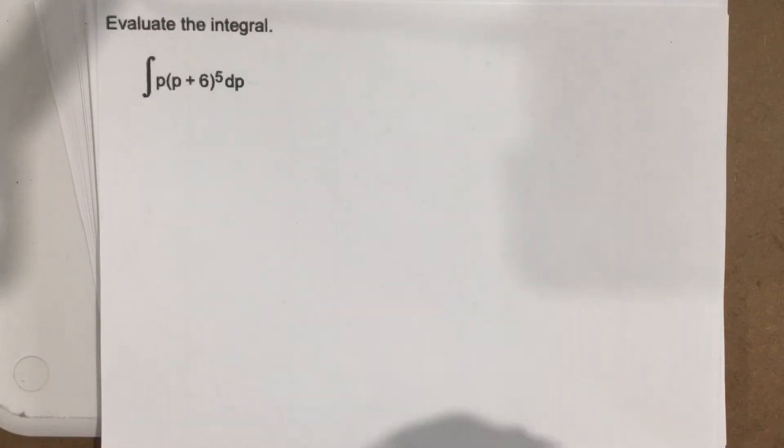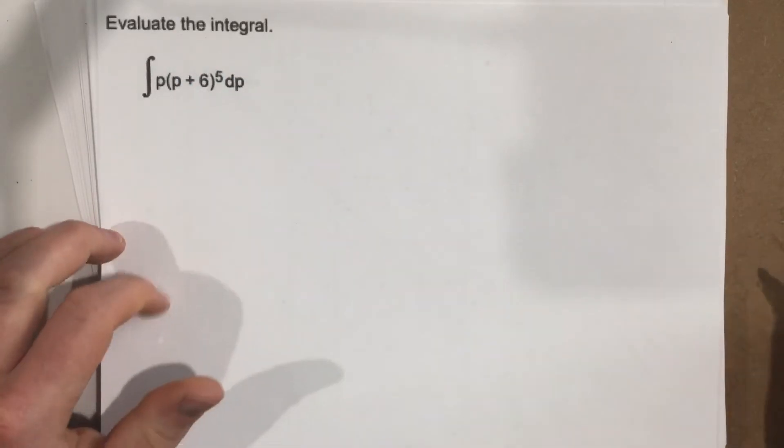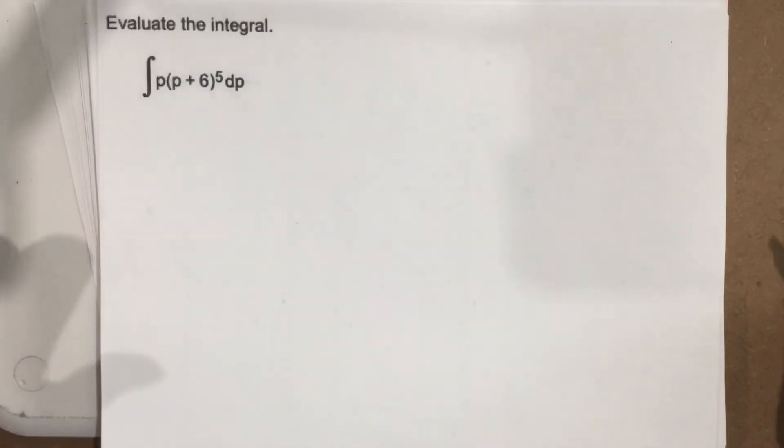This is problem number 4 from section 5.5. They want us to evaluate the integral. They're not giving us a u substitution, so we have to figure out what expression, p plus 6 or p, do we want to make u?